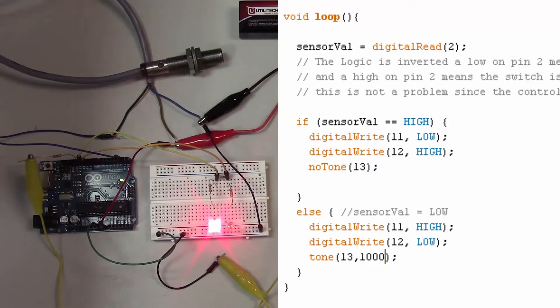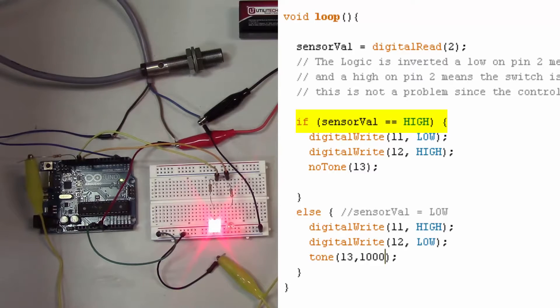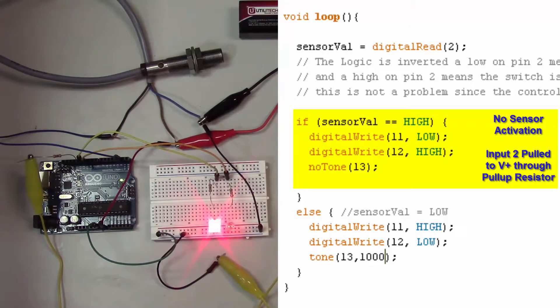Once we've got our output set up, as far as the rest of the program goes in our loop, we basically set up an if statement. For that if statement, we're checking to see if the input's high. The input's going to be high if we don't have any sensor activation, because the sensor, when it's activated, pulls the output to ground. So if we don't have that happening, we're not pulling the signal to ground, that means it's going to be positive 5 volts, which is high.